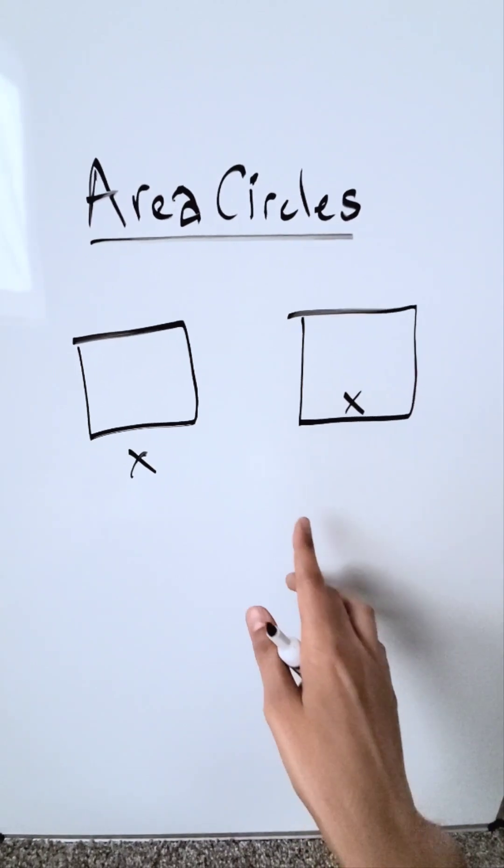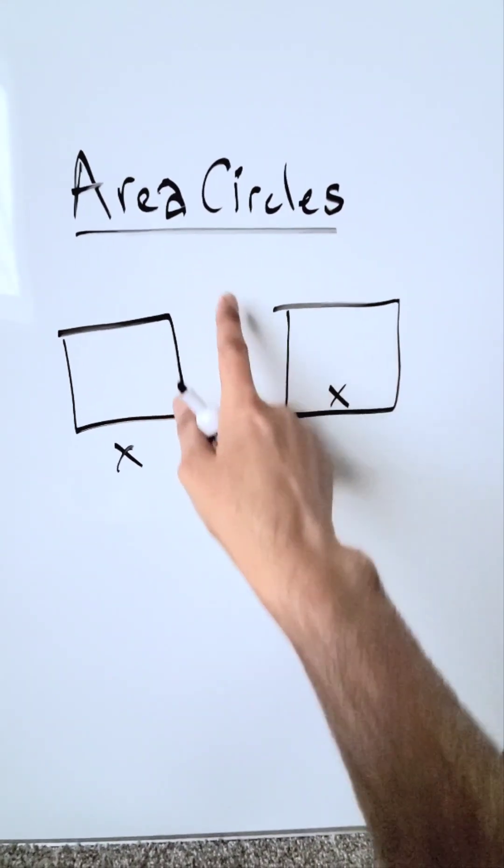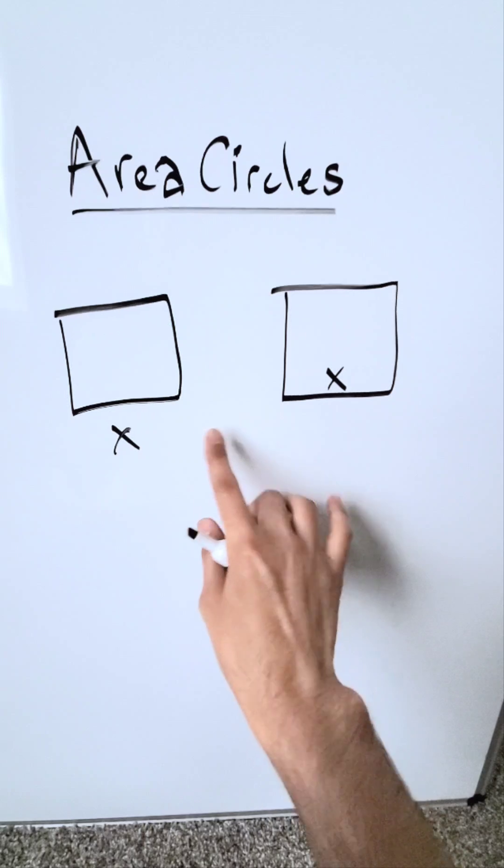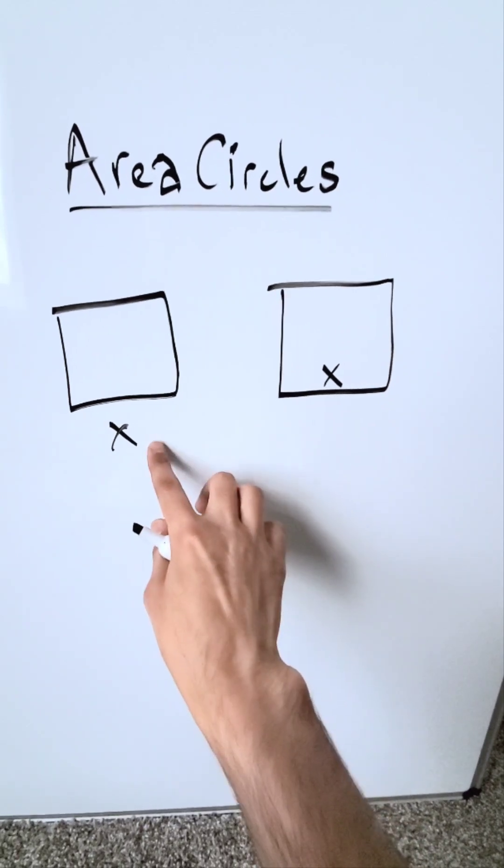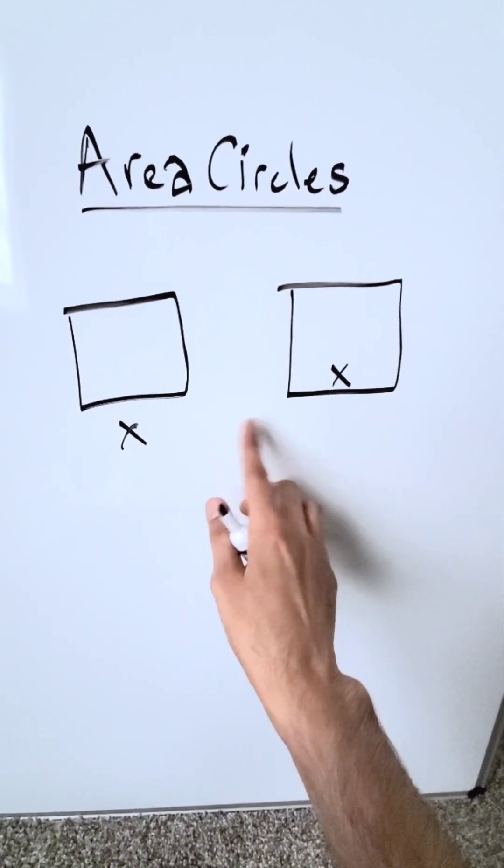Let me share an interesting observation related to area circles, but we're starting here with squares. I have two squares. Each square has a side dimension of x, meaning these are equal squares.